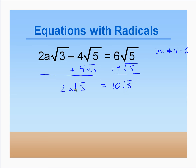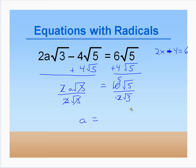We want to solve for a. Both 2 and √3 are multiplied by a, so we divide by 2√3. The 2's and the √3's cancel on the left. On the right we have 10 over 2√3, and 2 goes into both giving 5 over √3. Since we can't have a radical in the denominator, we multiply by √3 over √3. That gives 5√3 over 3, so a = 5√3/3.